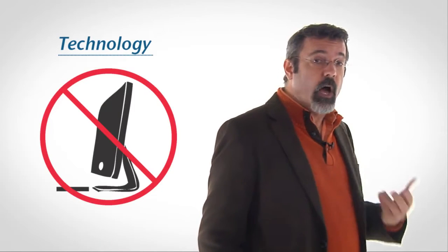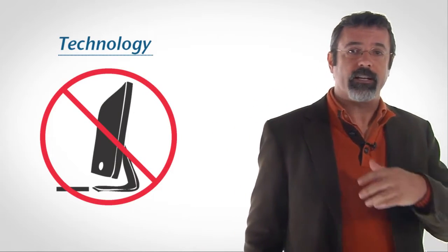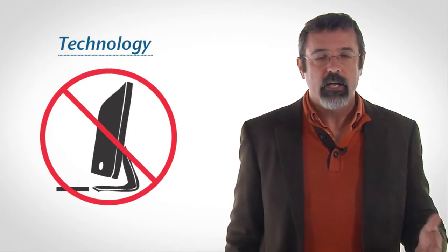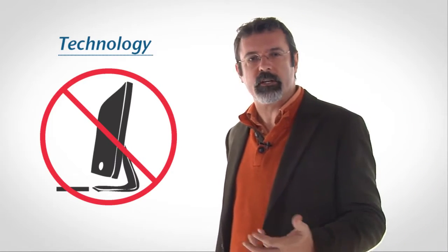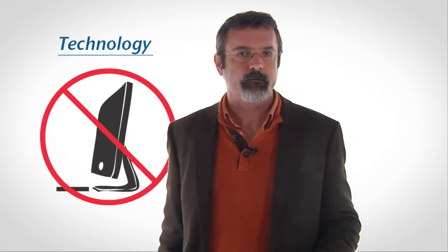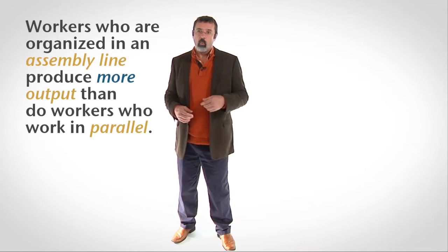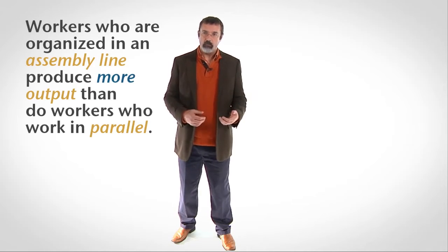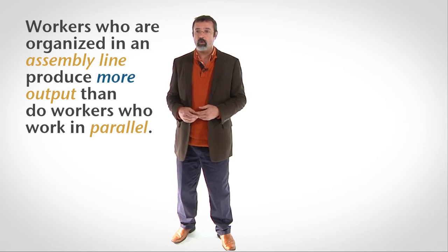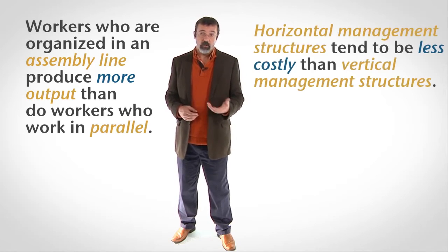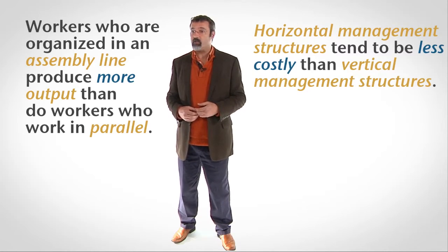Technology is not computers. Computers are economic capital. Technology is intangible — it is the company's managerial and productive sophistication. For example, workers who are organized in an assembly line produce more output than workers who work in parallel. Horizontal management structures tend to be less costly than vertical management structures. These are examples of differing levels of technology.